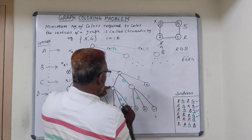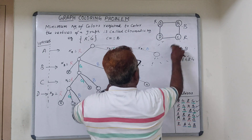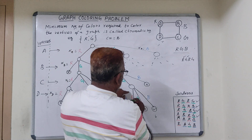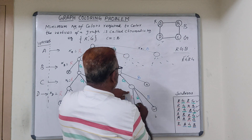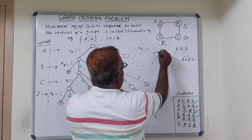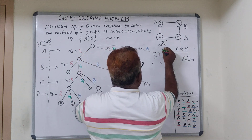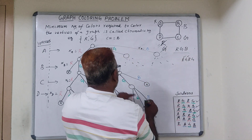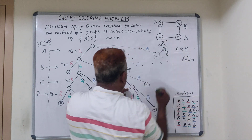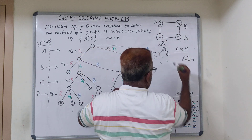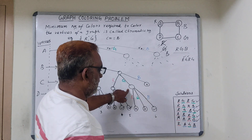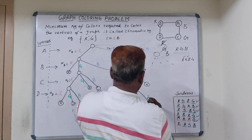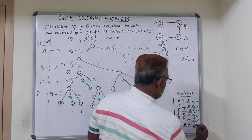All three possibilities for D with C=red are done. Go back to C and change its color to green. For D: if D is red, A is also red — not a solution. If D is green, C is also green — not a solution. If D is blue, we get A=red, B=blue, C=green, D=blue — this is a solution. Next try C as blue; but B is also blue, so the tree terminates there.